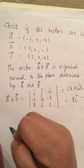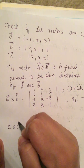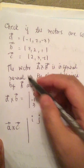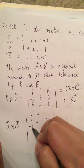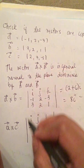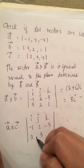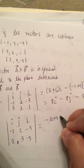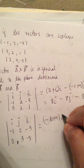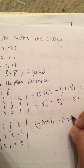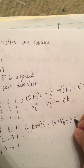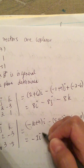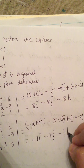Vector A cross C: setting up I, J, K with vector A as negative 1, 2, negative 3, and C as 2, 3, negative 5. This equals negative 10 plus 9 times I, minus negative 5 plus 6 times J, plus negative 3 minus 4 times K. This equals negative 1I minus 11J minus 7K.